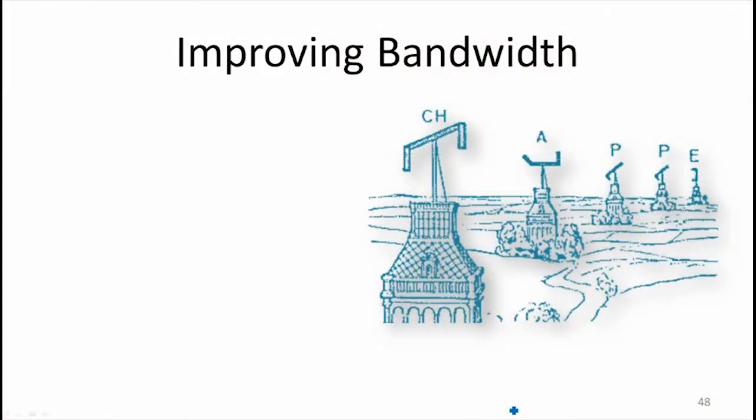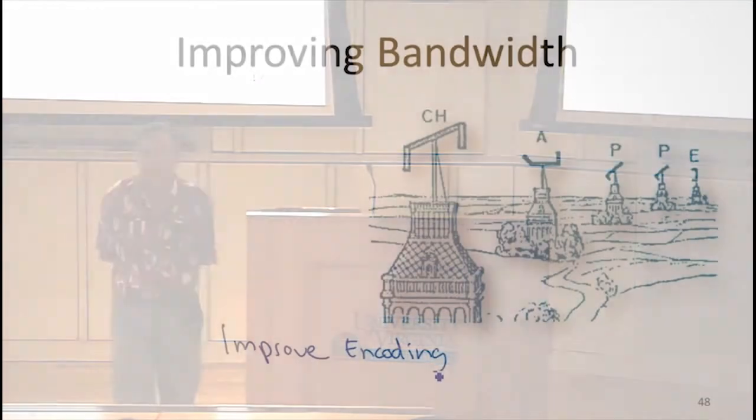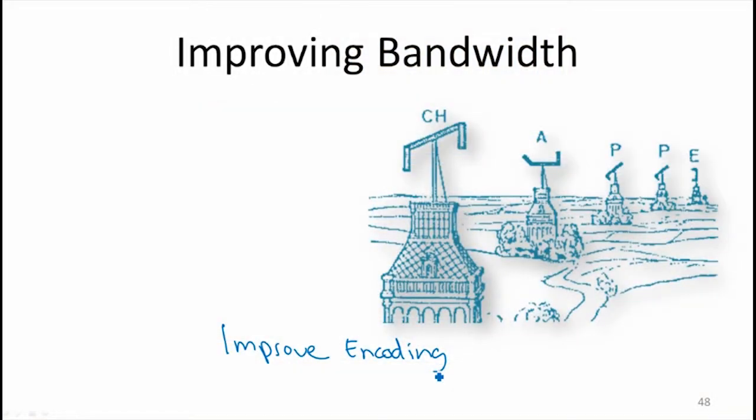So if you want to improve bandwidth, let's think about Claude Chappe's network first. How do we improve bandwidth? If we improve the encoding, that's going to improve bandwidth. What are other things we could do to improve bandwidth? Make it concurrent? What would that mean for this?